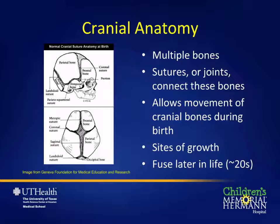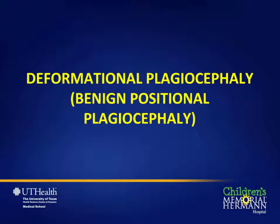There is a metopic suture in the forehead between the two frontal bones. The sagittal suture continues down the midline over the vertex of the head. The coronal suture runs from one ear to the other over the top of the head. The lambdoid suture lies in the back between the parietal and occipital bones. These sutures can deform in response to external pressure. Craniosynostosis refers to a condition where these sutures fuse early, often before birth, restricting normal growth.